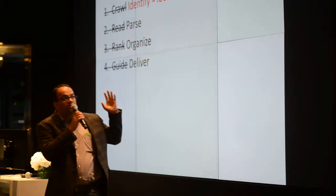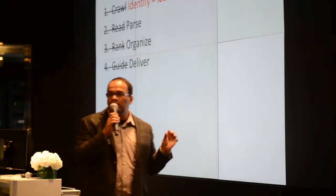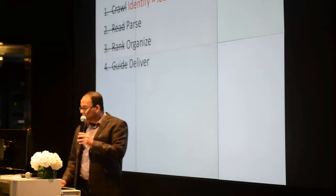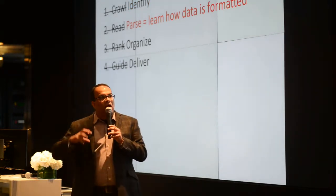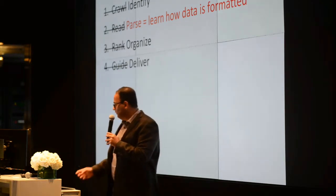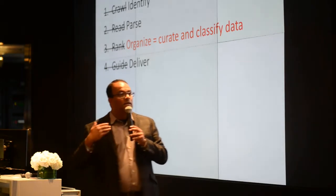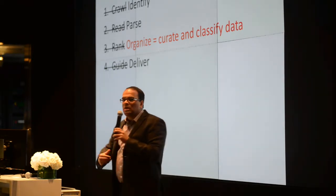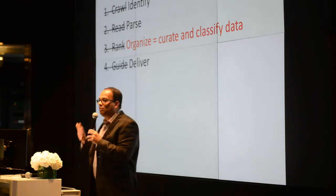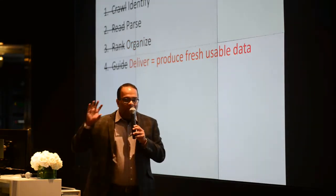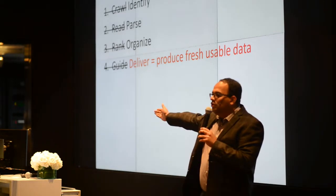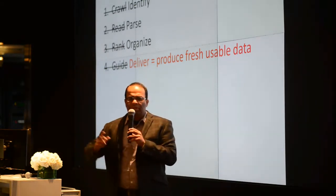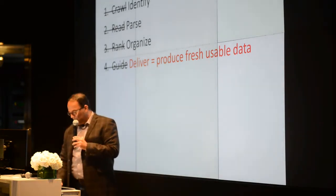For starters, you have to identify those small fraction of websites that hold numerical data, and furthermore, where on those websites the data is actually placed. You need to actually understand the data — understand how it's formatted, how it's structured — because only then can you do useful stuff with it. You have to organize the data in some way: curate it, classify it, build data taxonomies and hierarchies. It's a completely different approach to discovery and exploration. Finally, you have to give the user more than just a URL — you actually have to deliver usable data and always deliver the latest version, because stale data is useless.